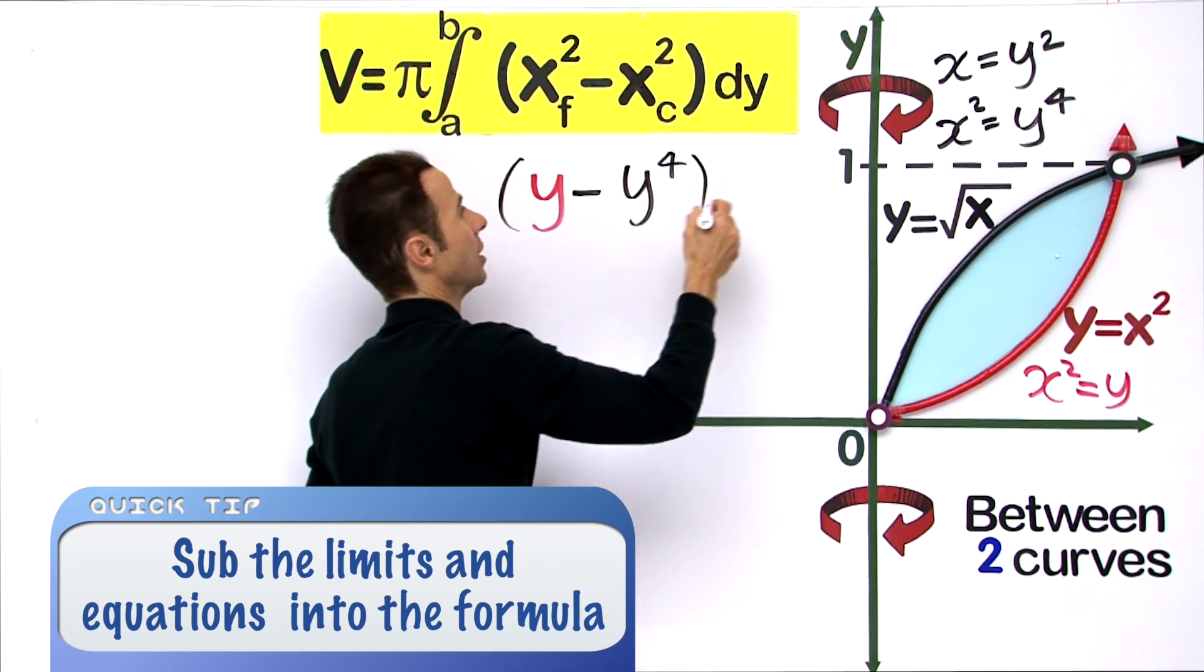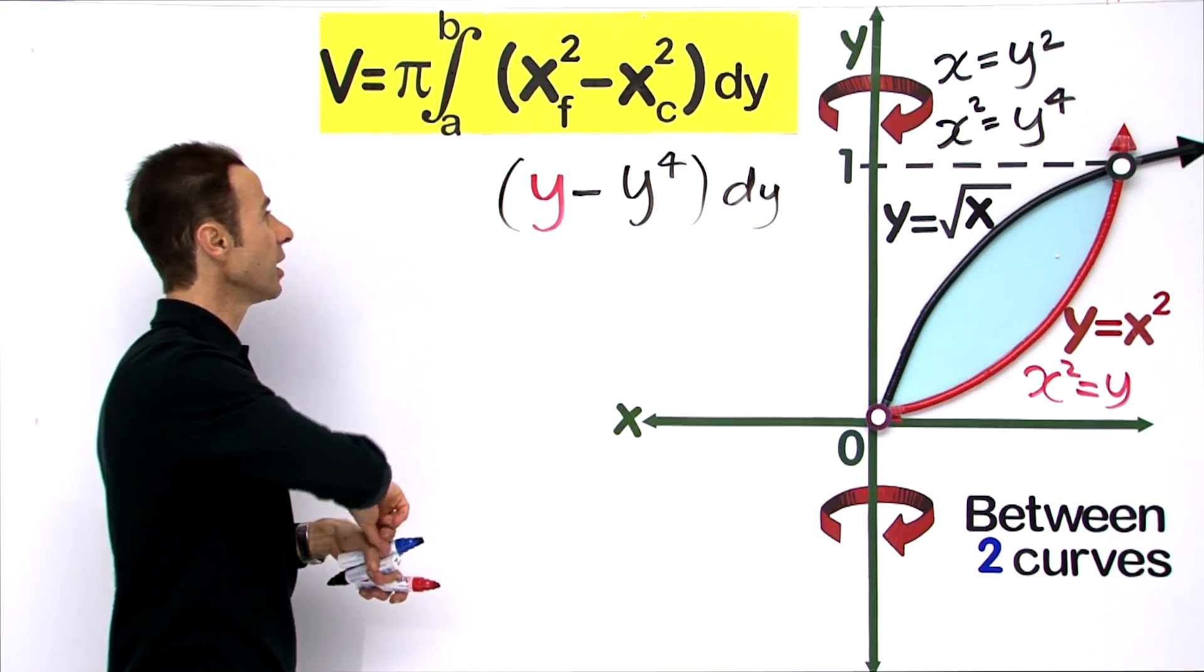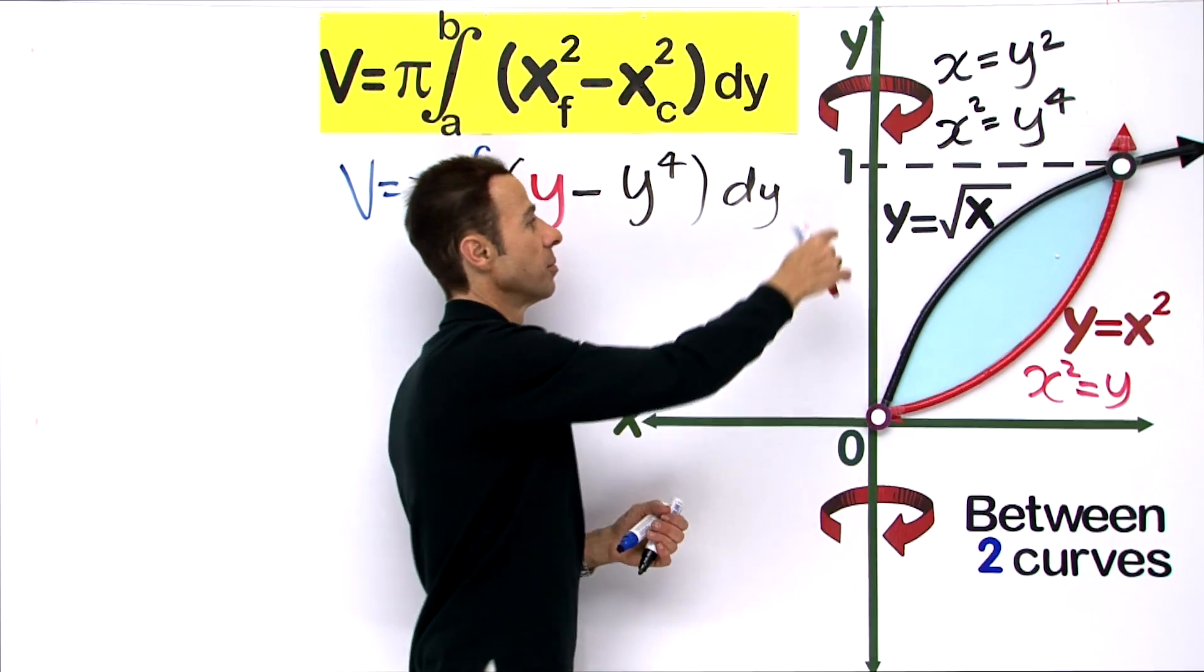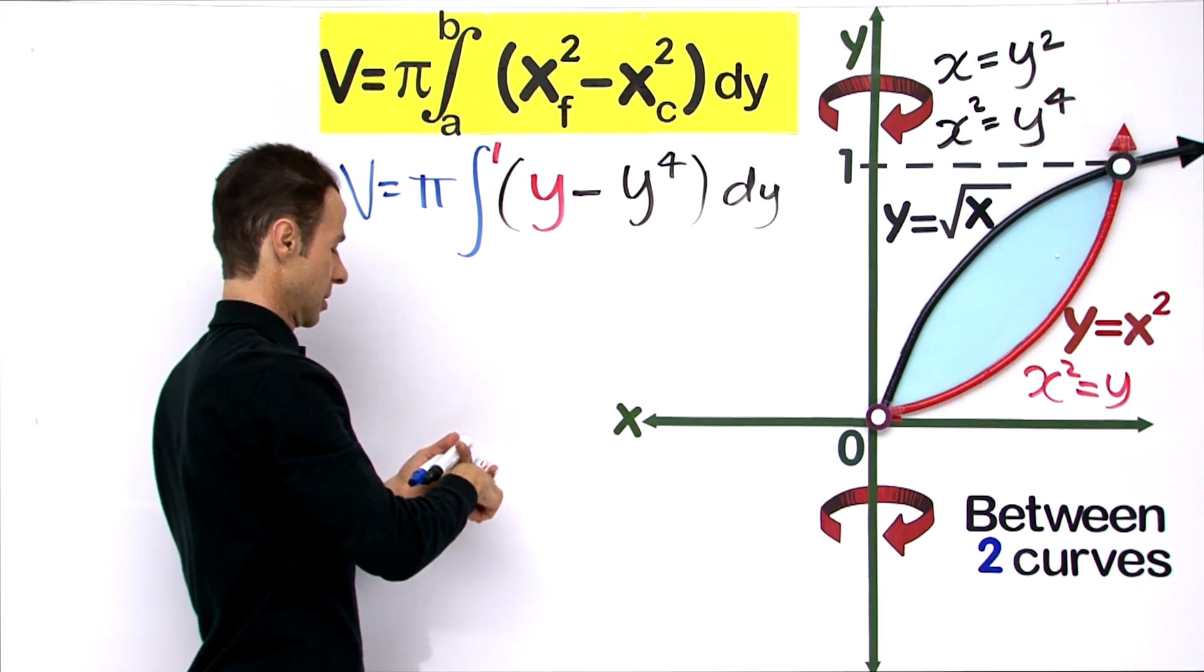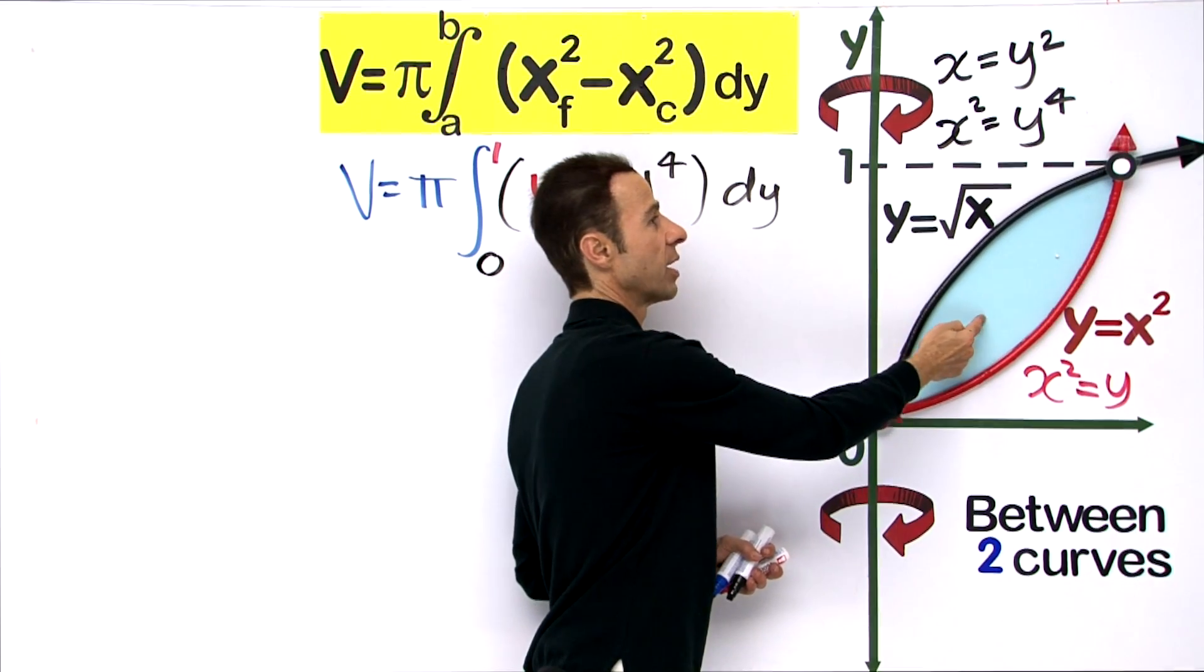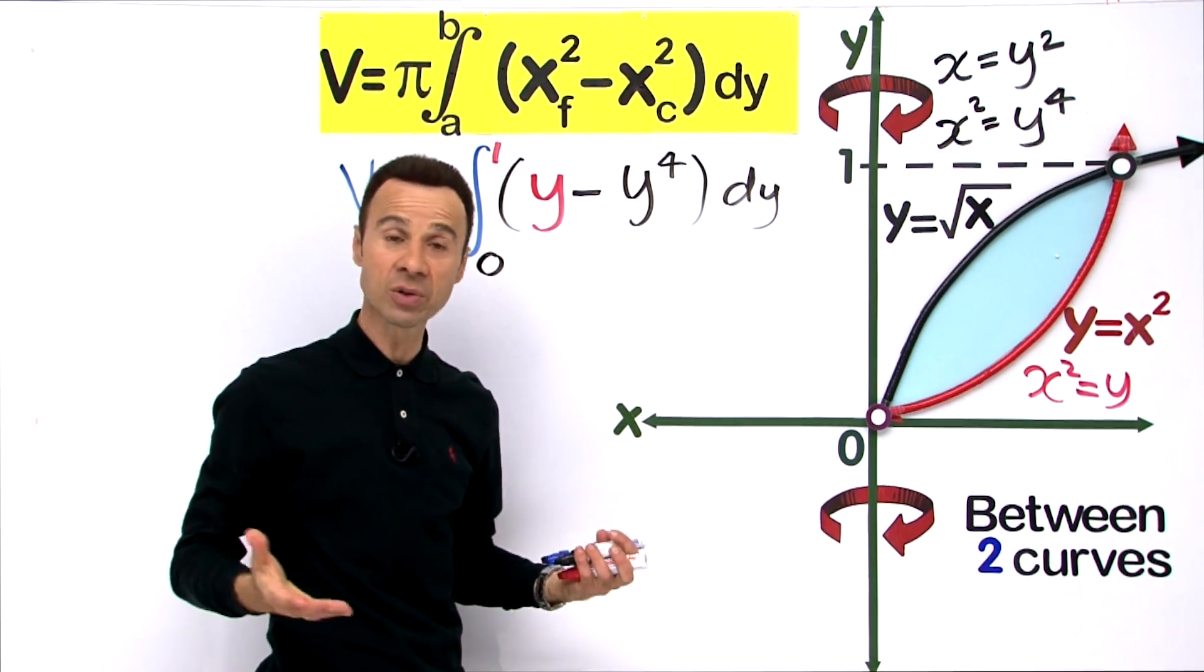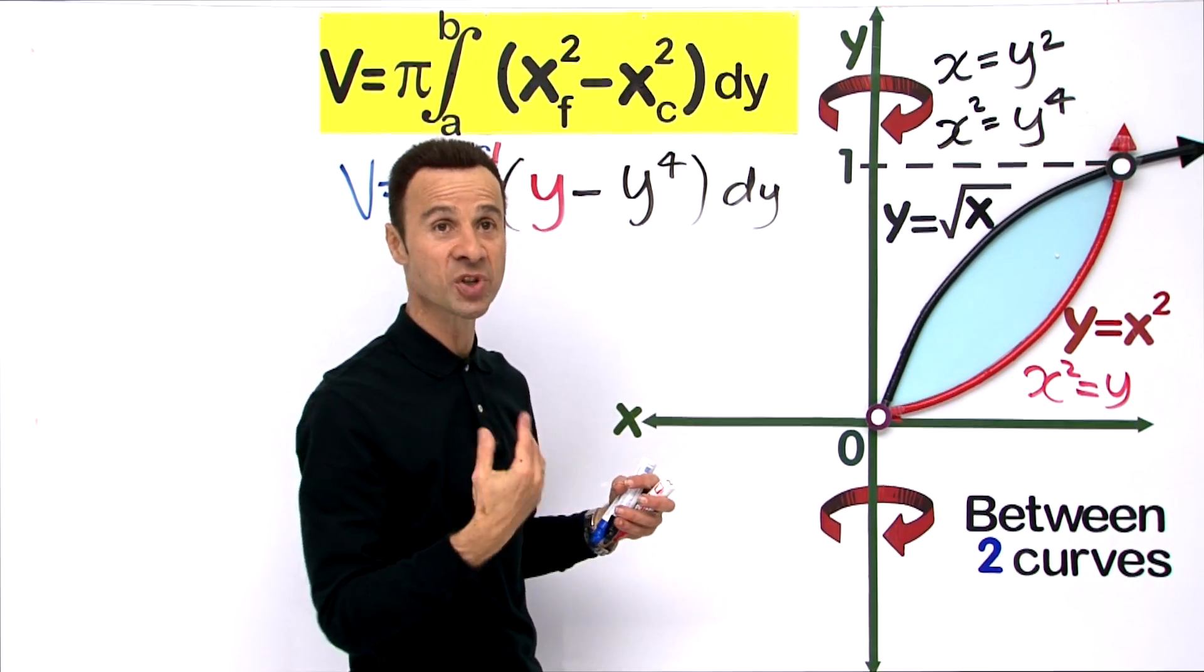So the volume v equals pi times the integral between 1 and 0, which will give us the volume of revolution generated from this region around the y-axis. Before we work out that volume, I am going to draw this in 3D so we can see what it looks like.